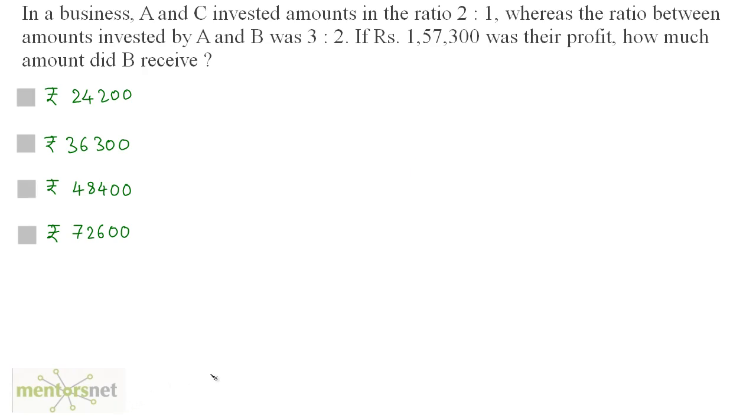In a business, A and C invested amounts in the ratio of 2 is to 1, whereas the ratio between amounts invested by A and B was 3 is to 2. If Rs 1,57,300 was their profit, how much amount did B receive?